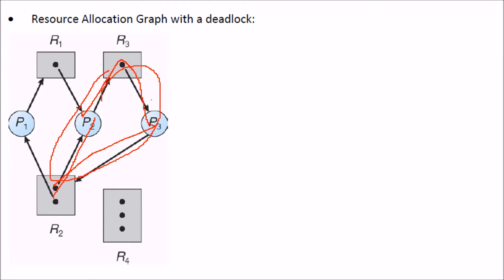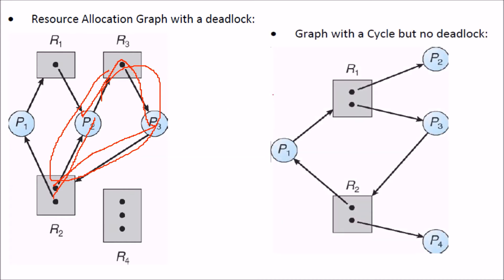When a cycle is there, that means the system may be in deadlock, may not be in deadlock. But we have conditions also where there are certain situations where we have a cycle, but there is no deadlock.